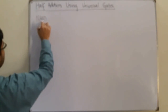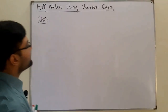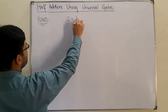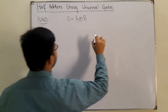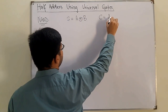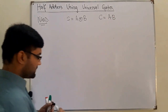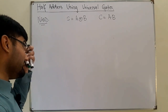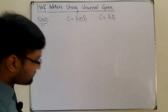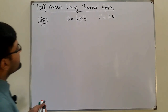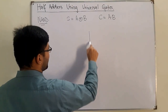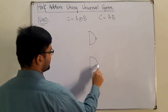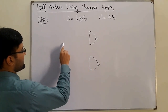In case of the half adder, the sum is A exclusive-OR with B, and the carry is A times B. Now I'm drawing a circuit which will have only NAND gates and will act as a half adder. We have NAND gate one, NAND gate two, NAND gate three,